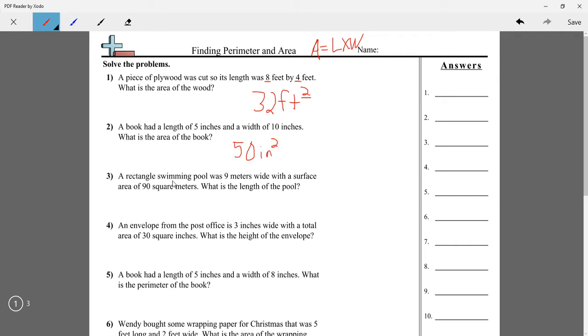A rectangular swimming pool was 9 meters wide with a surface area of 90 square meters. What is the length of the pool? I know that area equals length times width. Let's fill in what we know, because they didn't give us length and width to find the area. They gave us width and area. So 90 equals length times 9.